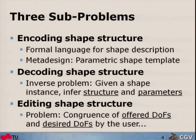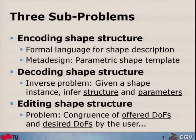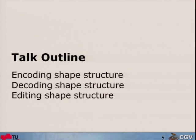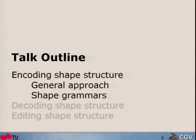First, we need a formal language for describing shape to describe a meta-design. A design is a specific shape; a meta-design is a whole shape family. Then the inverse problem is: given a shape instance, what are its structure and parameters? And finally, the detected degrees of freedom may not be quite what the user expects for editing the shape. This defines the talk outline.